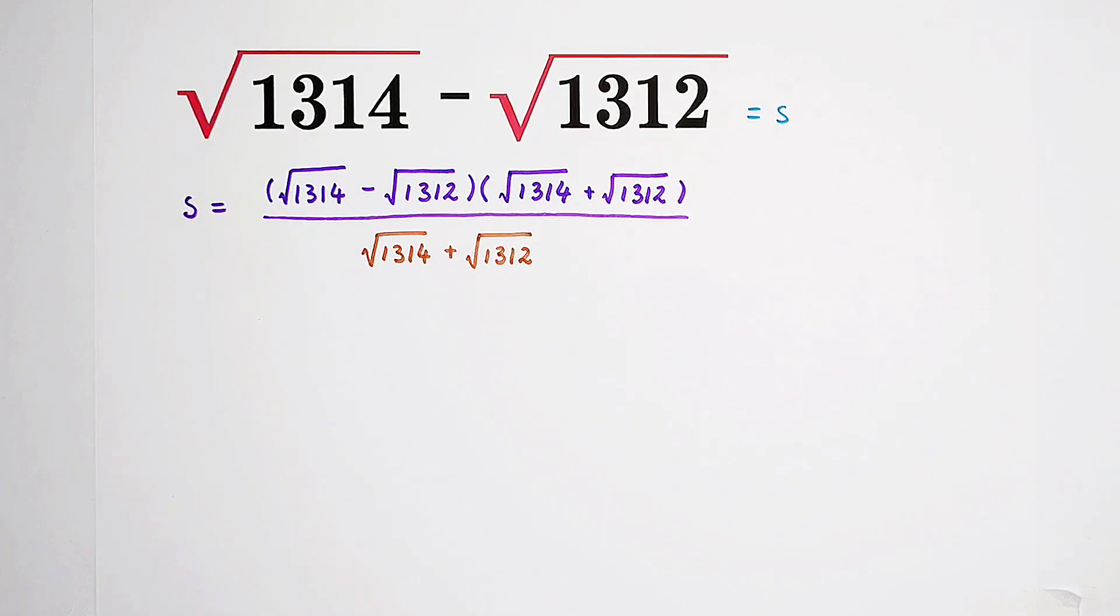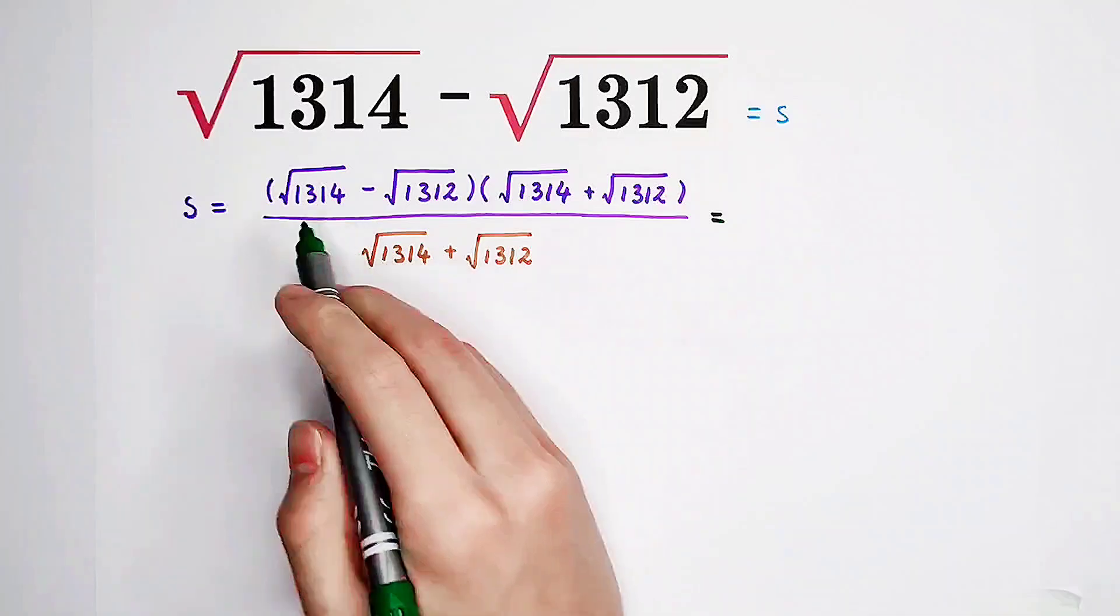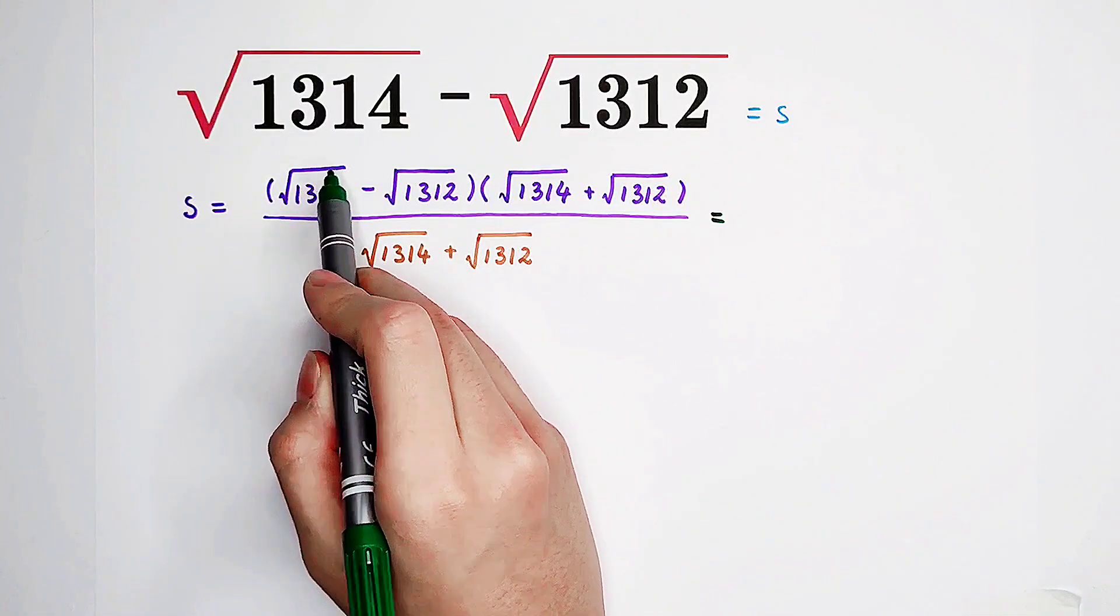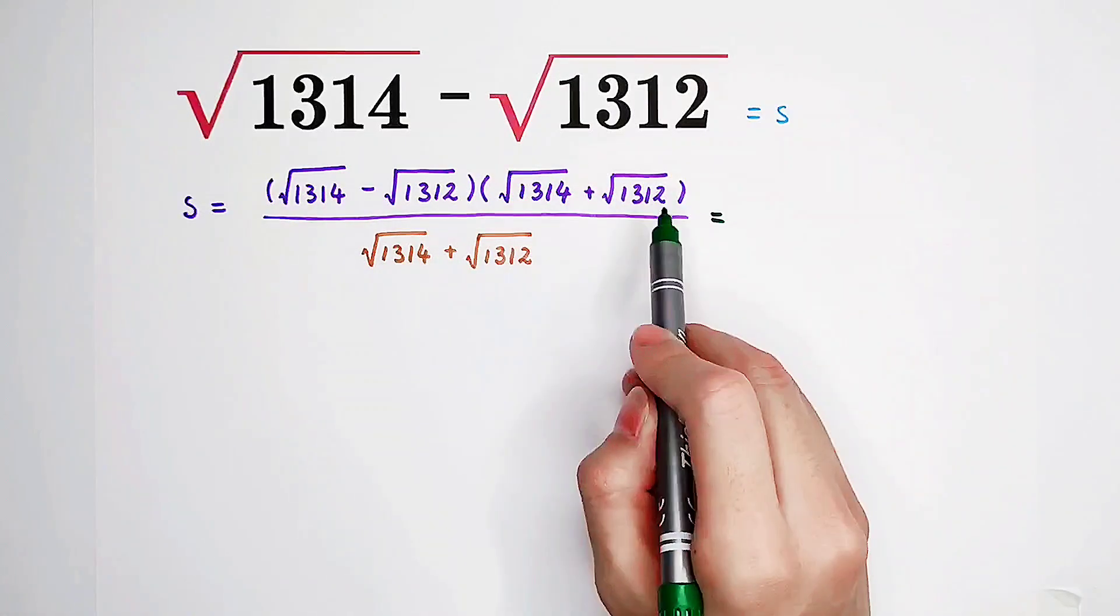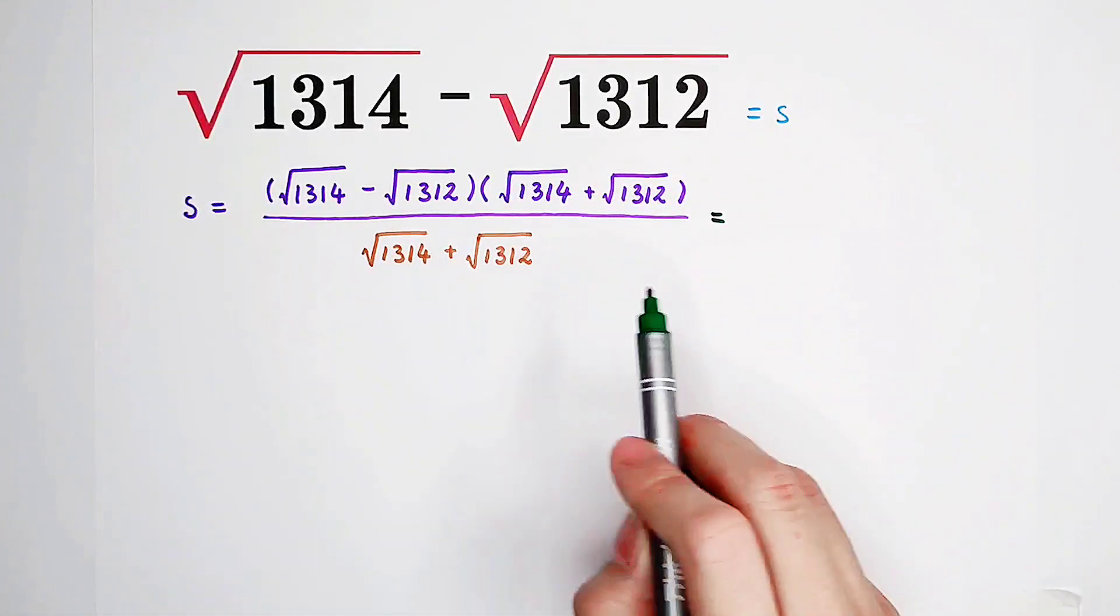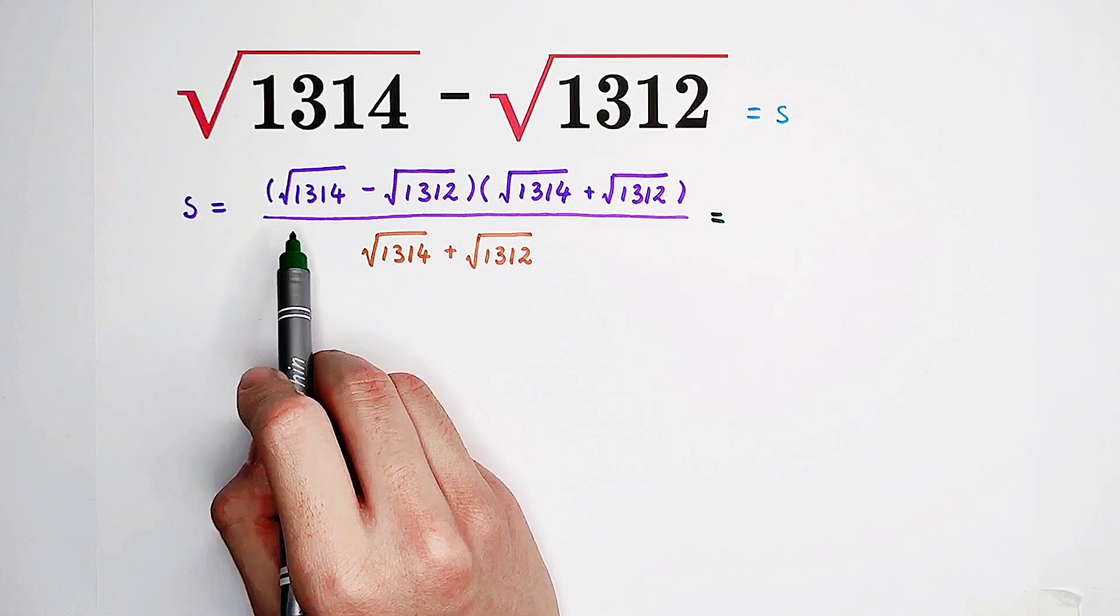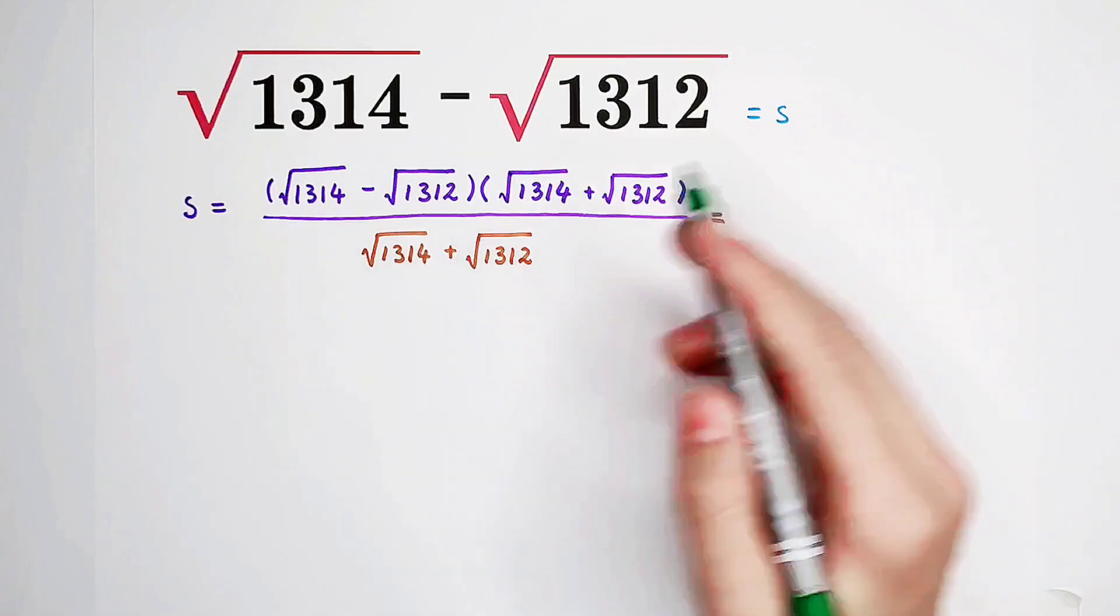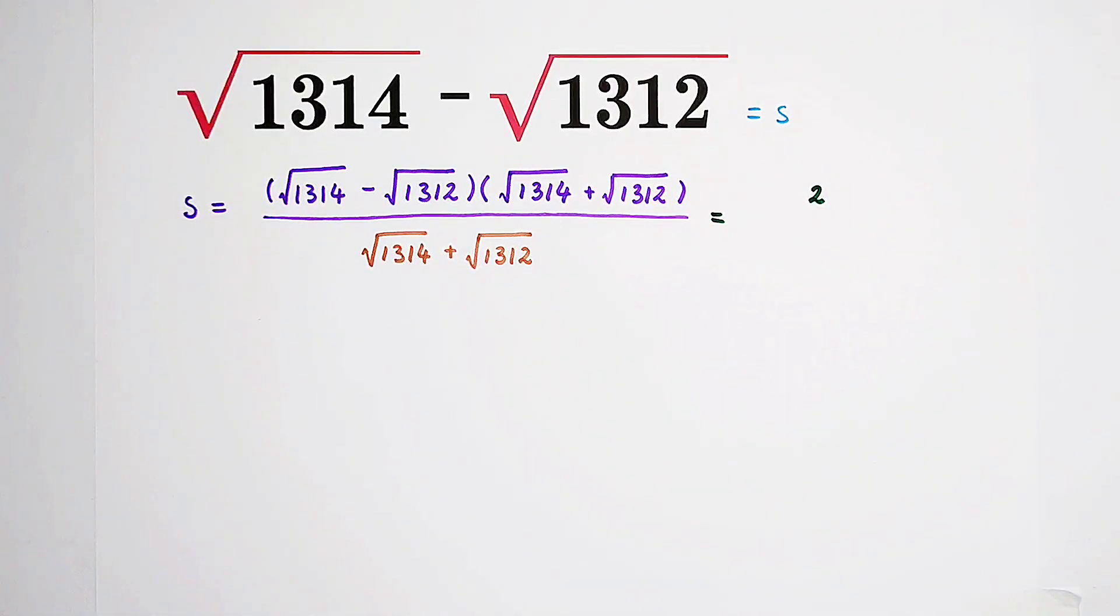Of course, we can evaluate the numerator. You can see, our numerator is actually this squared minus this squared. Because a minus b times a plus b is just a squared minus b squared. So it is 1314 minus 1312. It is just 2. So the numerator is 2.